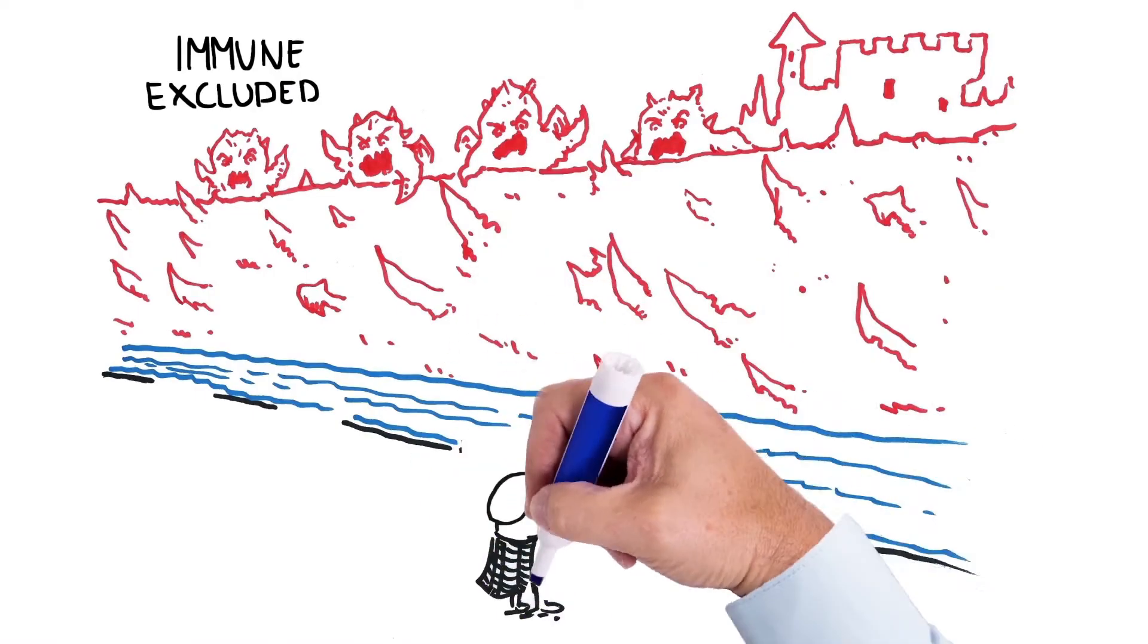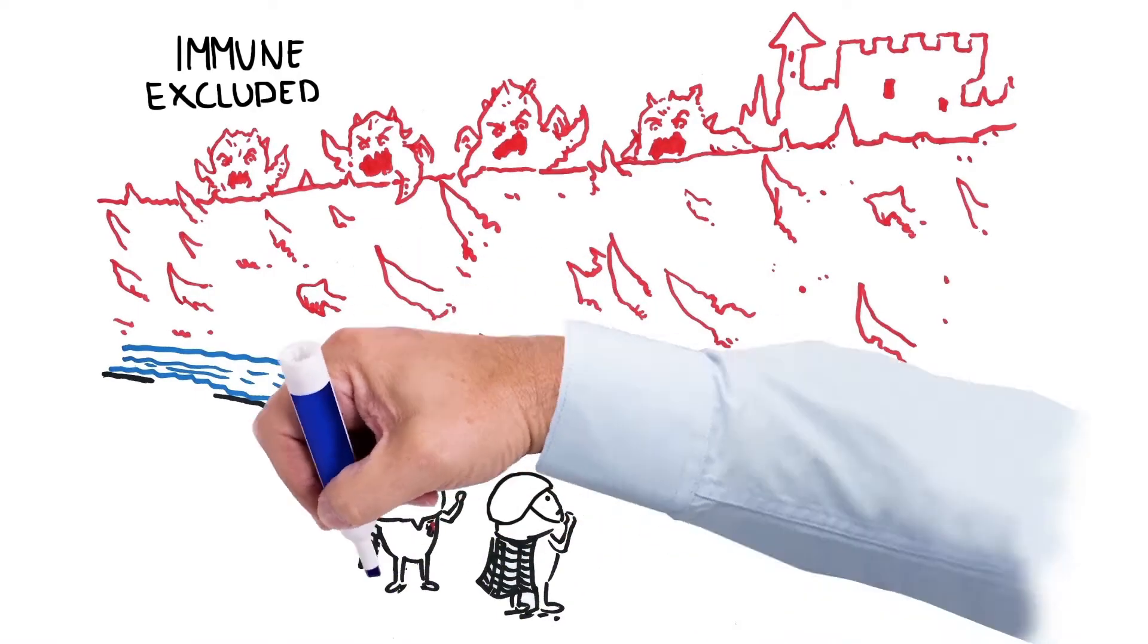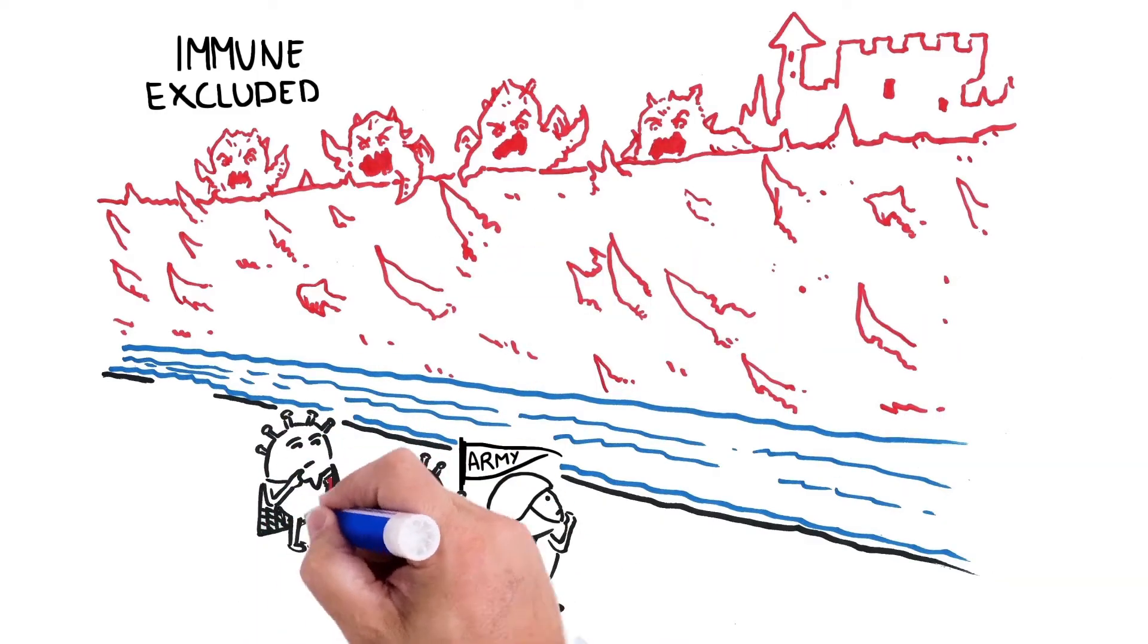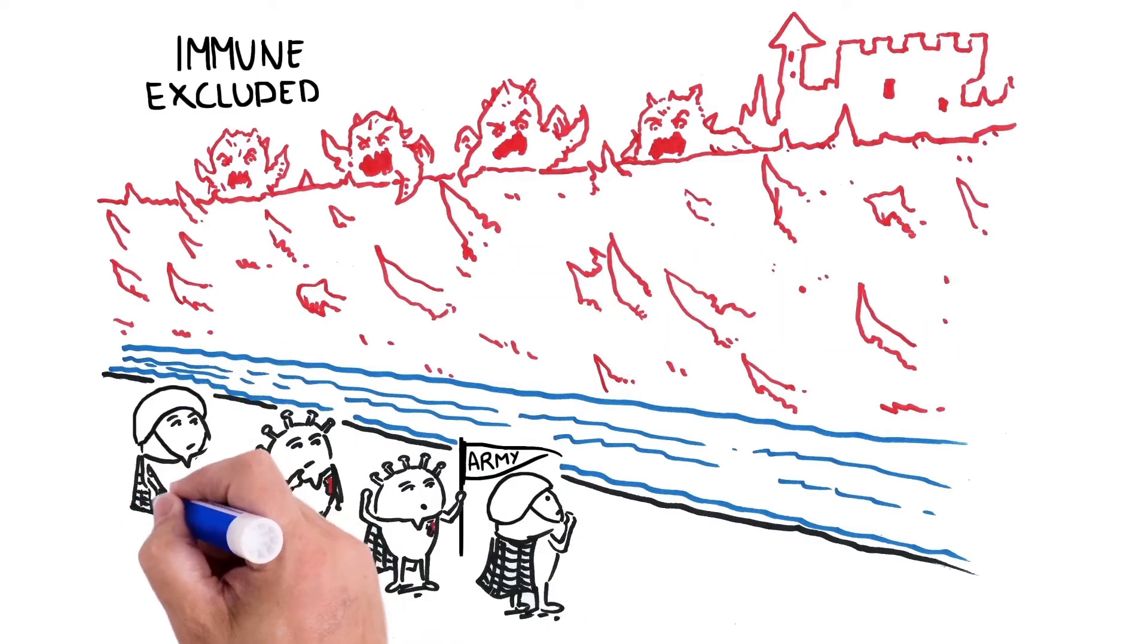When the tumor is described as immune excluded, you can imagine the T-cell army is ready to attack but is unable to scale the walls or cross the moat of the castle in order to attack effectively.